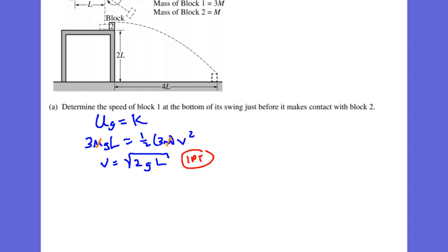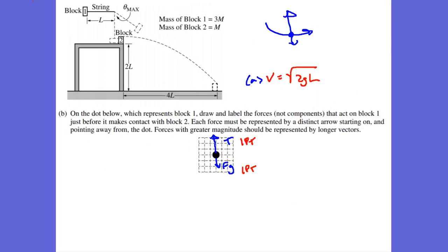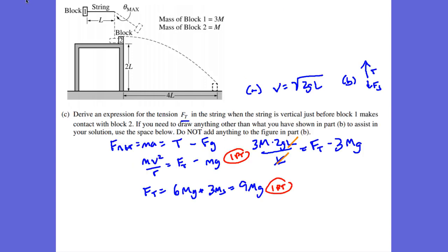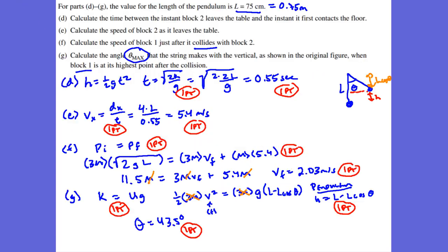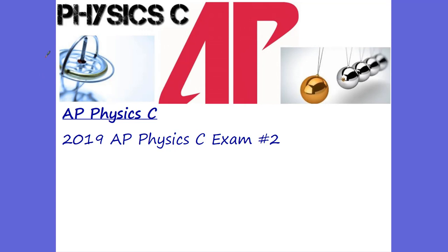That is the 2019 AP Physics C Calculus Mechanics problem number 2. A was worth 1 point, B worth 2, C worth 2, D worth 2, E worth 2, F worth 3, and G worth 3. Thanks, hope this helped. Have a great day.